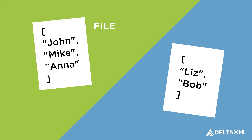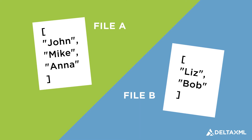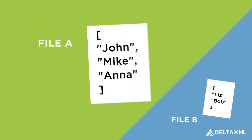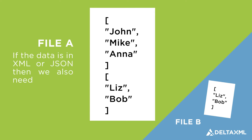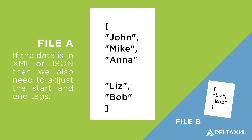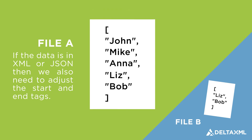It's common to have data in two files that we need to merge together. At the simplest level, copying one file onto the end of the other might do the job. If the data is in XML or JSON, then we also need to adjust the start and end tags to get a valid result, but it's not difficult to do that.